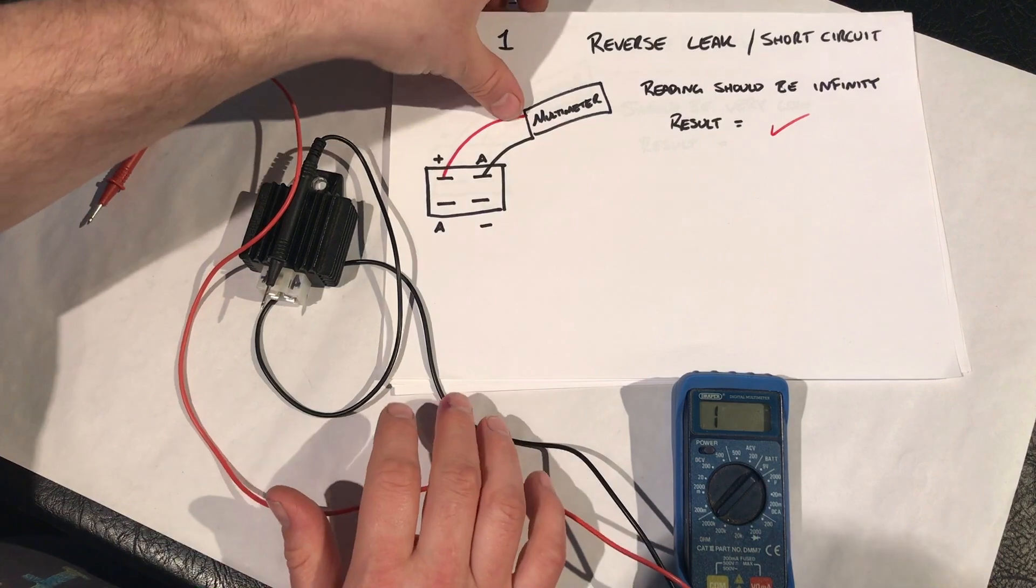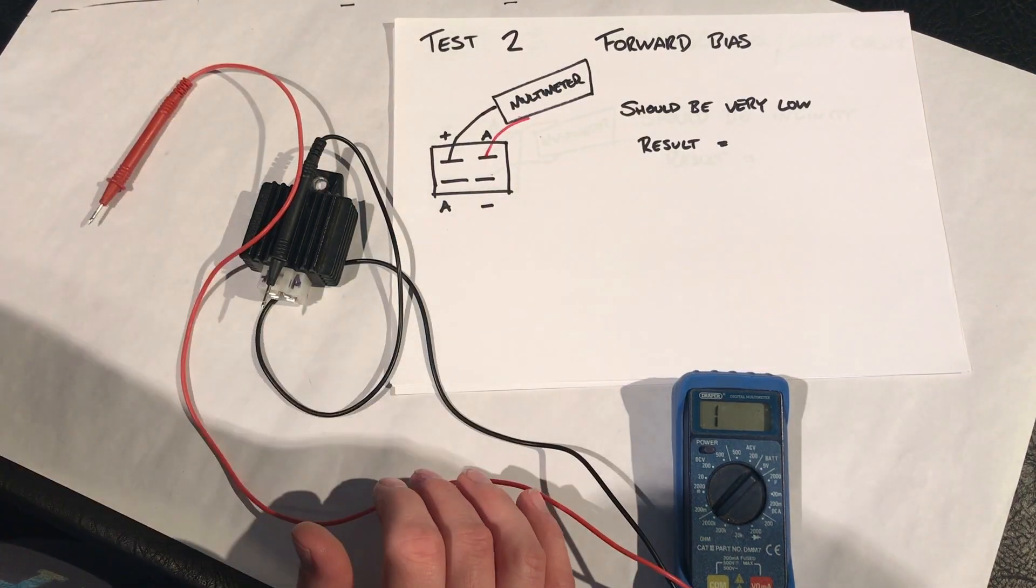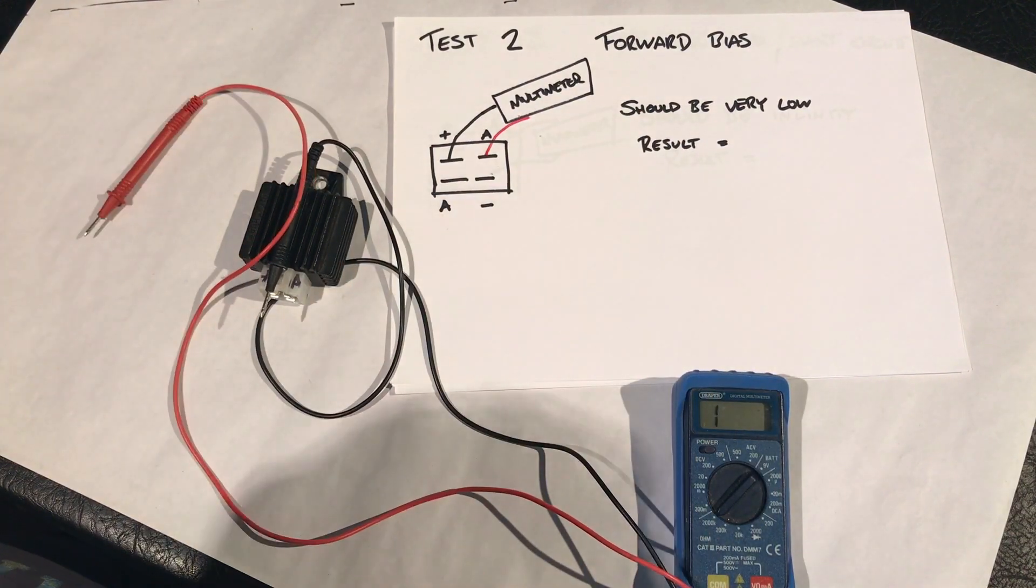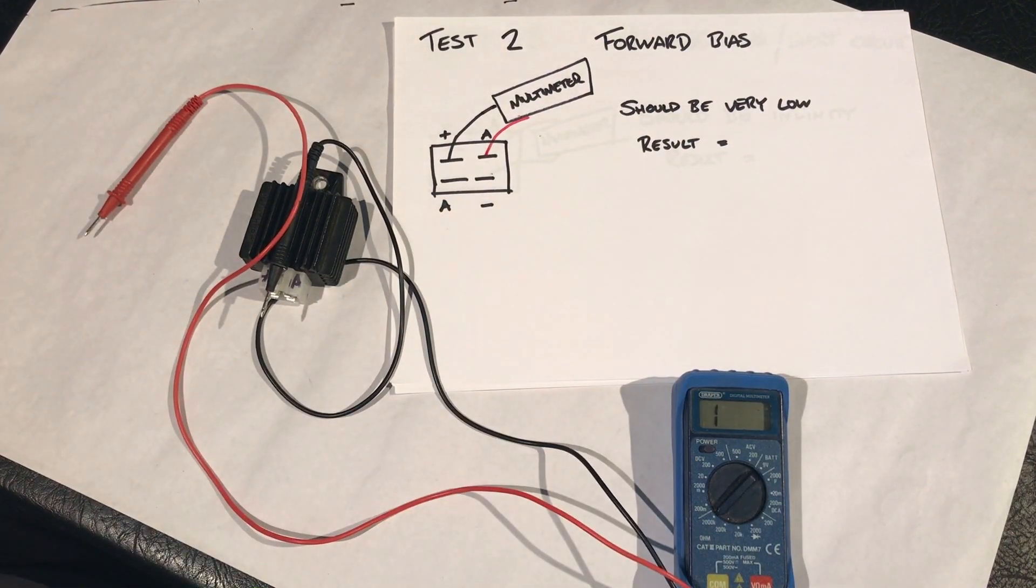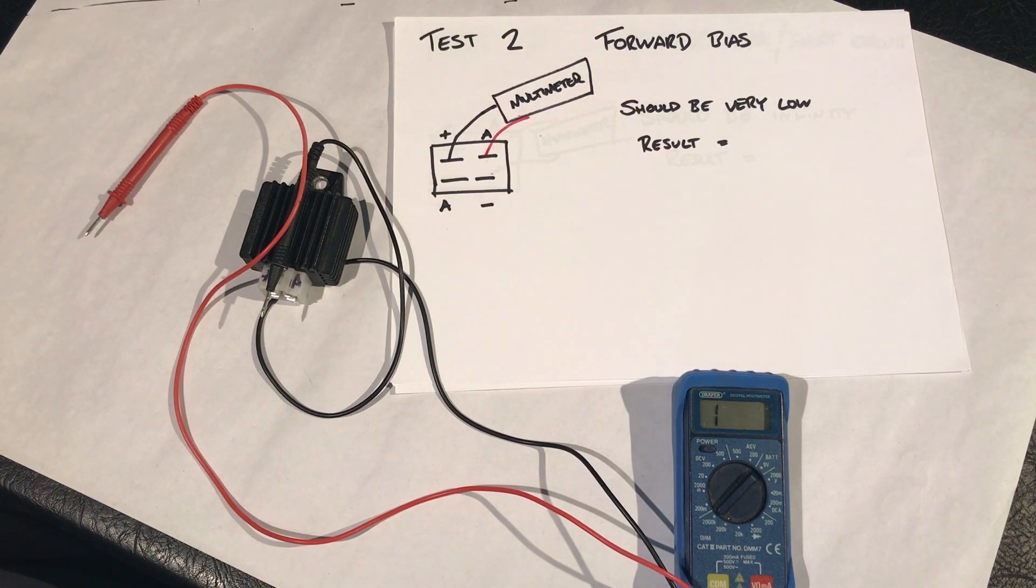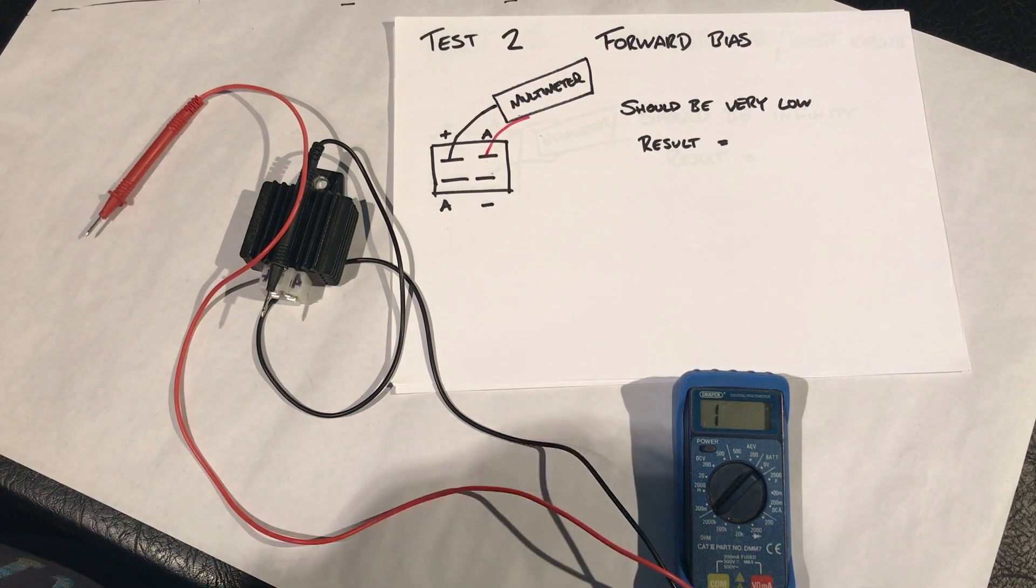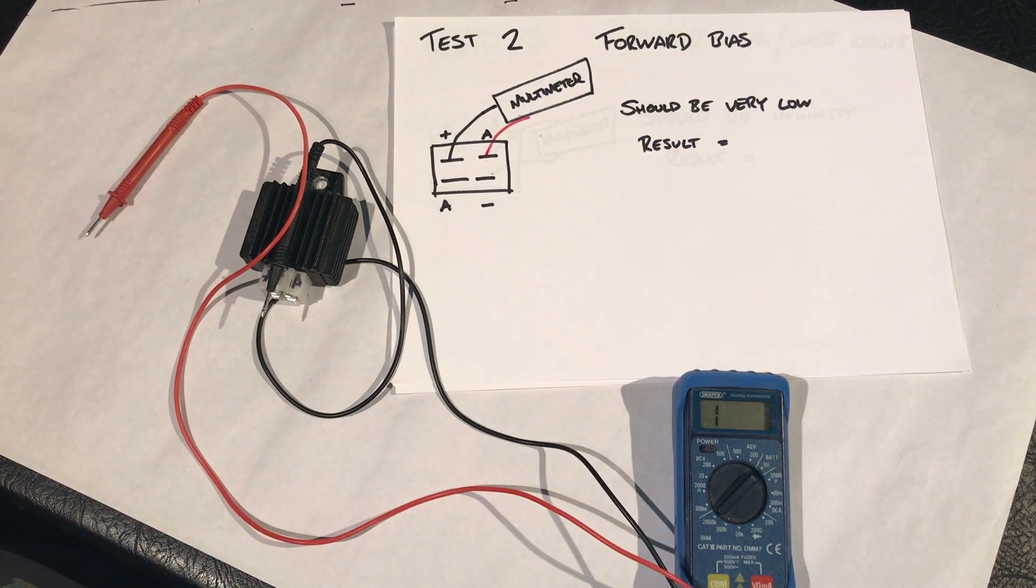Test two. Forward bias should be a very low result. Okay, so I have researched the meaning for forward bias. Forward bias is the DC, also known as direct current, voltage required to maintain current flow in a diode, or some types of transistor resistors. I think that's what they call it.